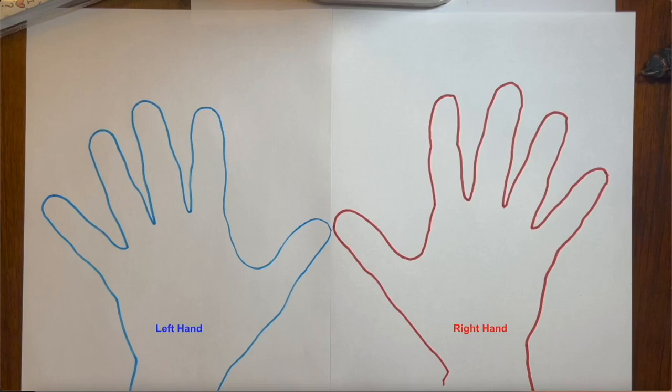Each finger of each hand is given a number. The thumbs are one and then fingers two, three, four and five. Notice it's the same pattern for each hand.